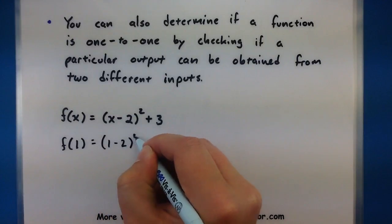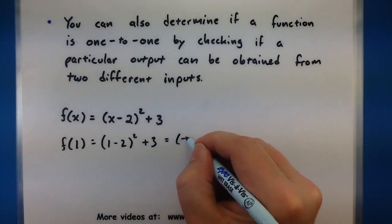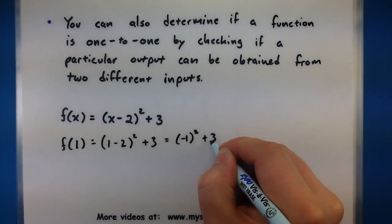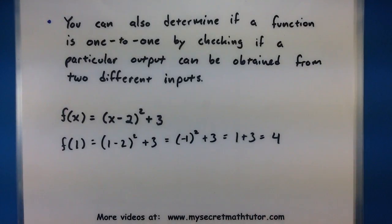So one minus two squared plus three. That would equal a negative one squared plus three, or one plus three, four. So when I put in a one the output is four.